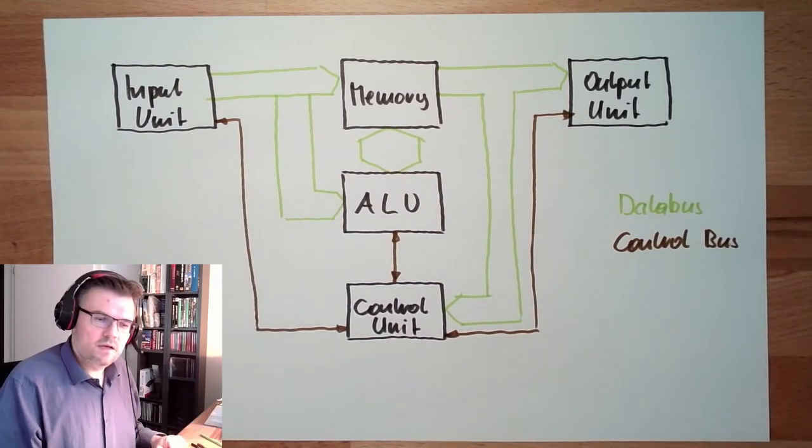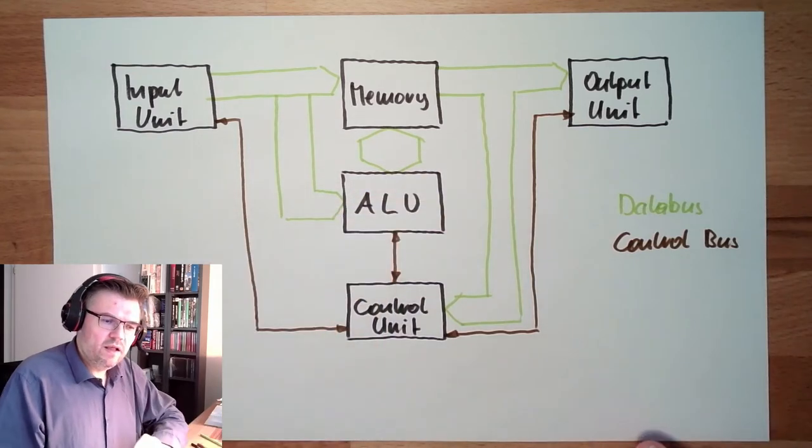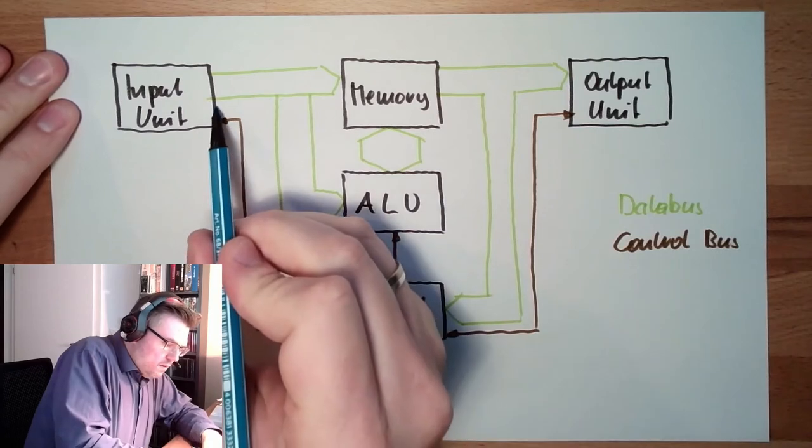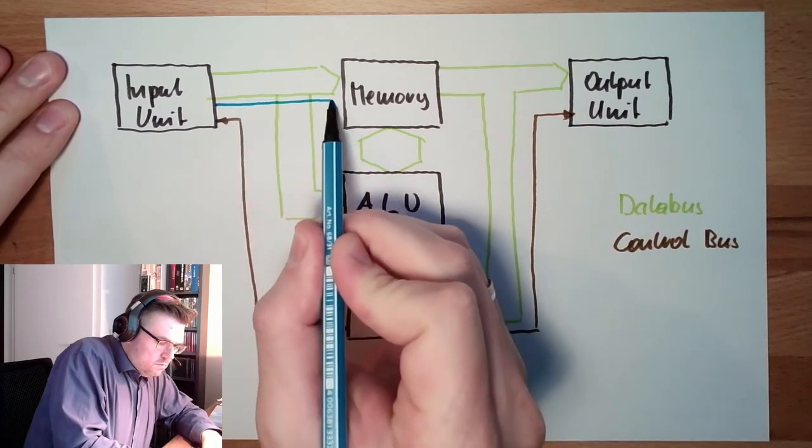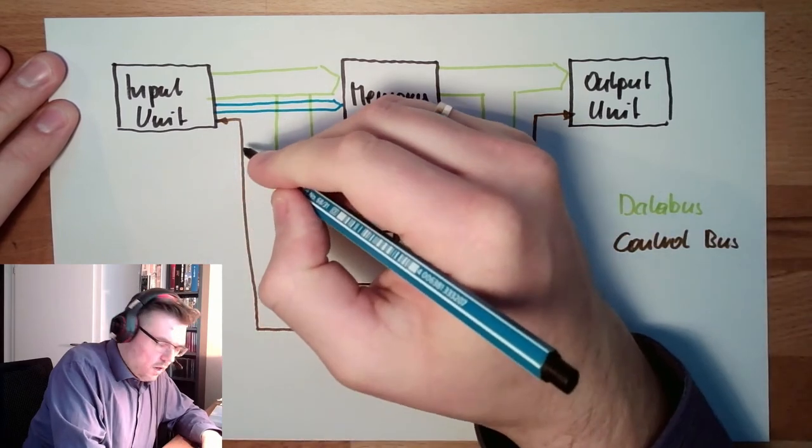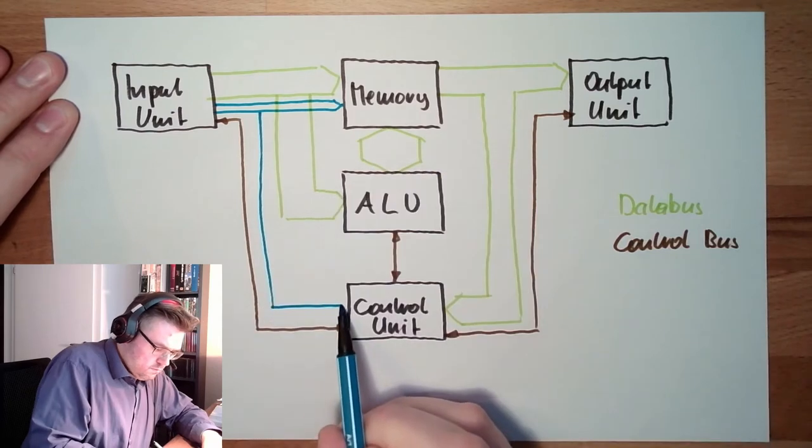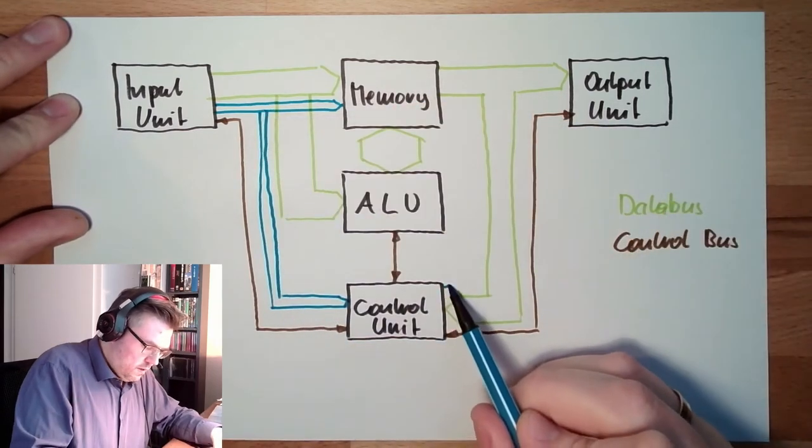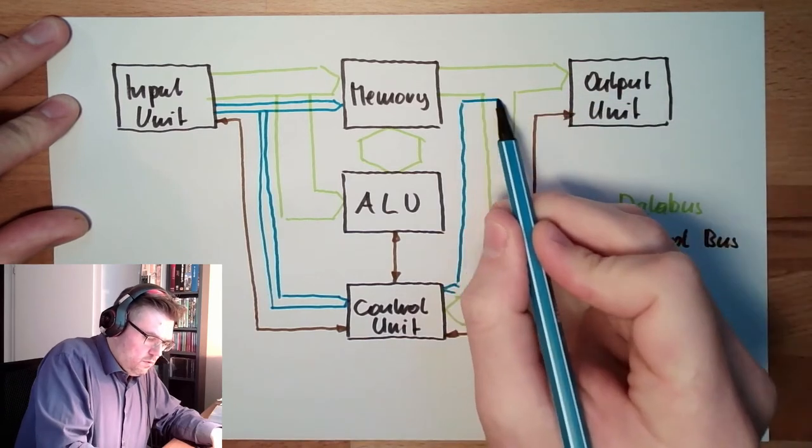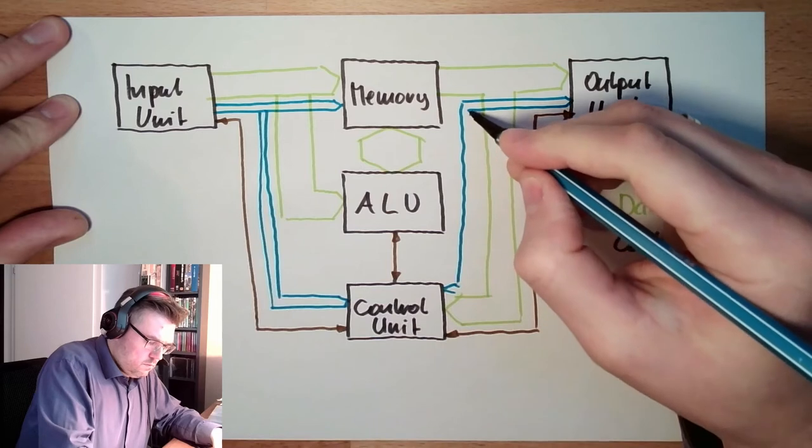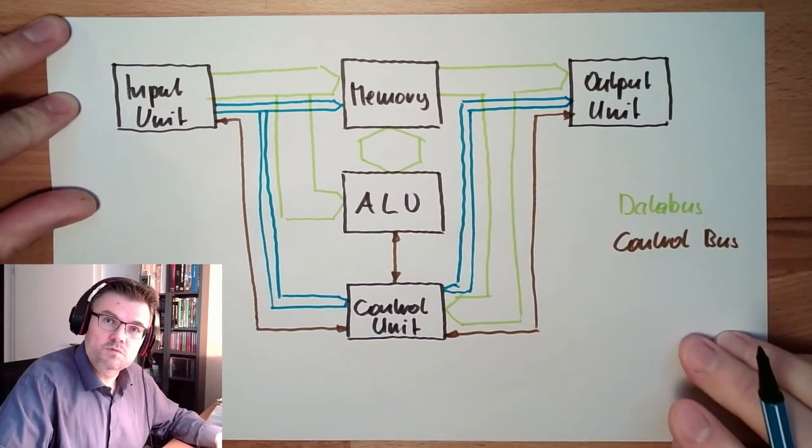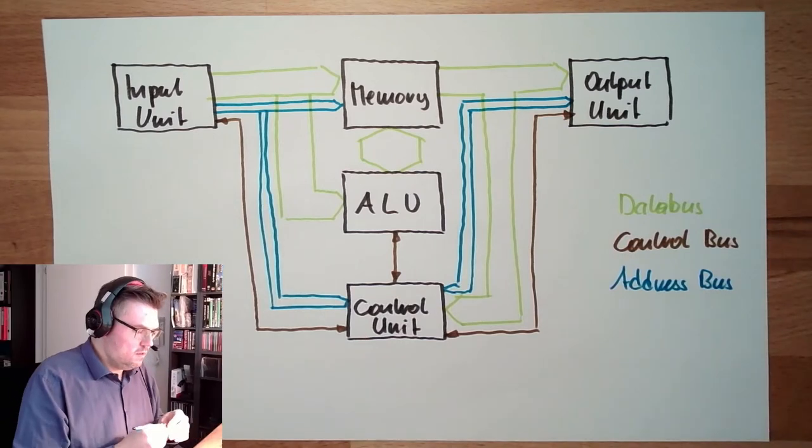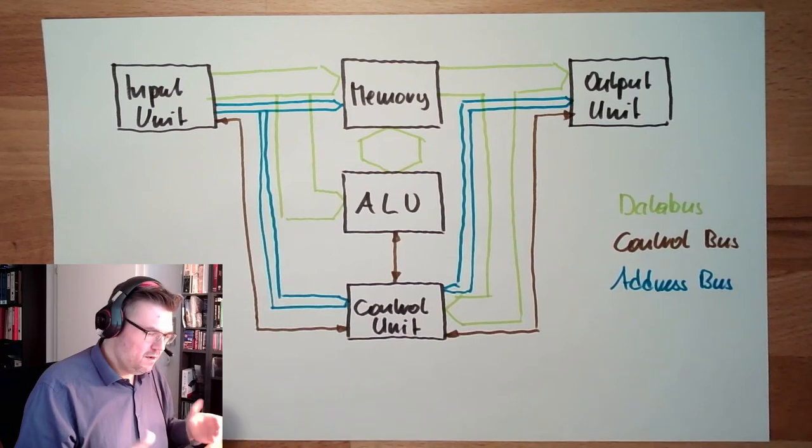And then there is the address bus. Somehow I need to tell where to write and so on. This color. There is here a connection, also down to the control unit, and also here to the output. This is the address bus. So you see, they can communicate to each other with different bus systems.